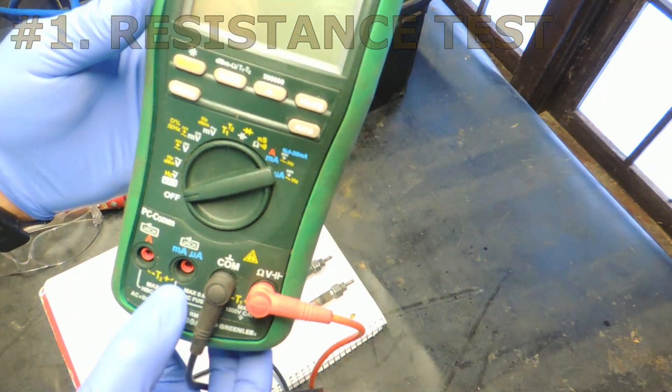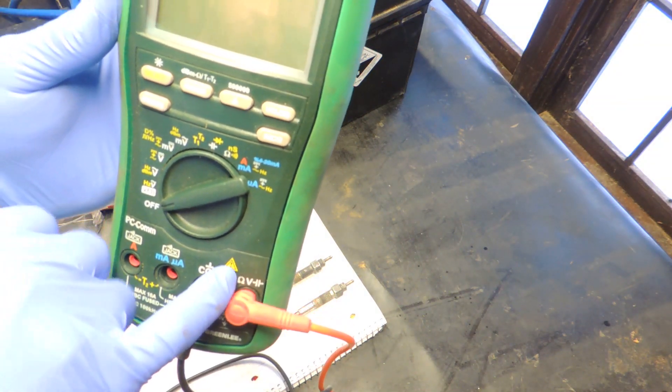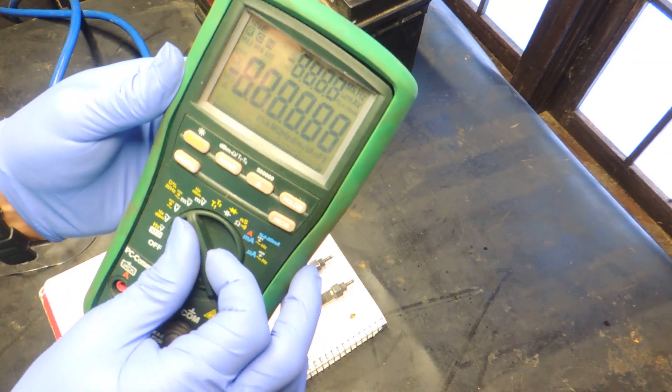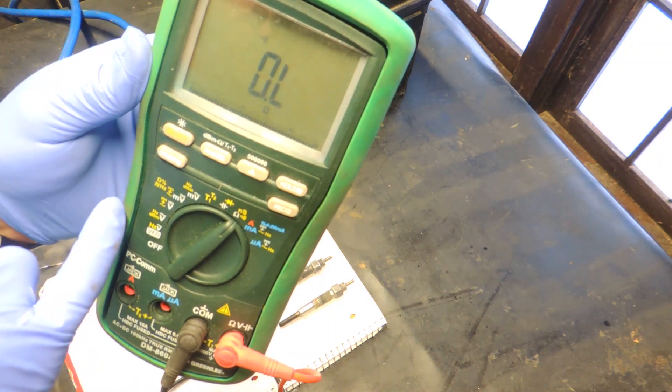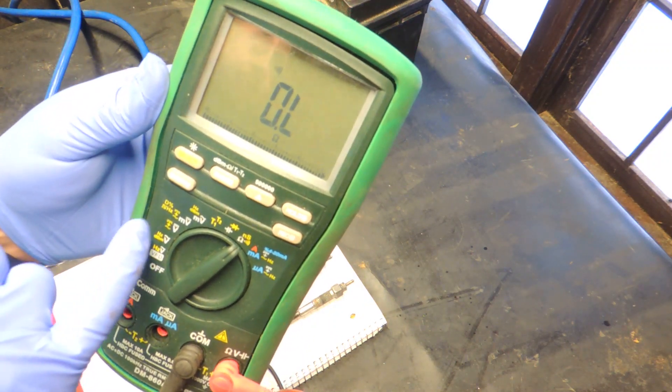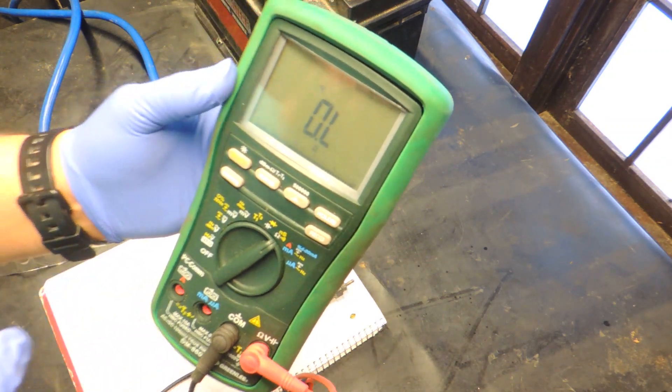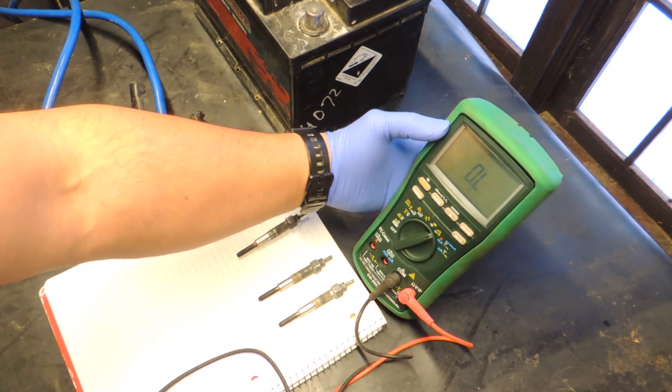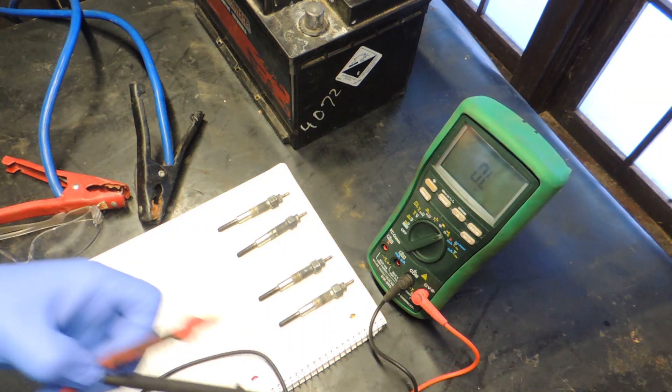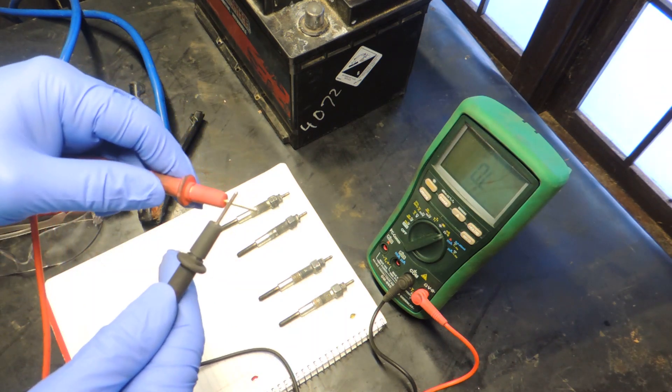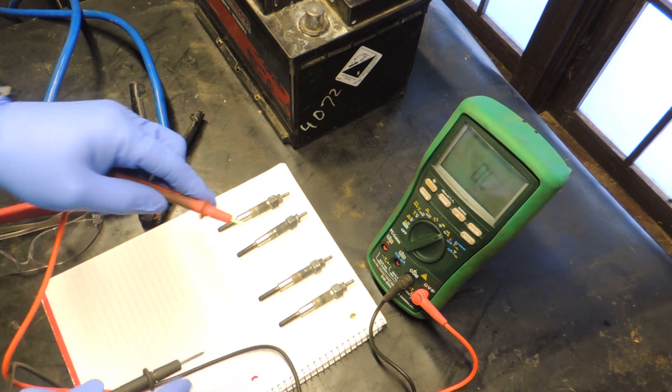We need to connect black probe to the cone and red one to the resistance terminal and set your multimeter to resistance. You see that Omega sign. First we're going to do the continuity test, just set that mode and you will see that audible symbol on your display. Continuity will tell us if the circuit is open and glow plug is broken. Let's check the continuity on our multimeter, can you hear that sound? Now we're good to go.